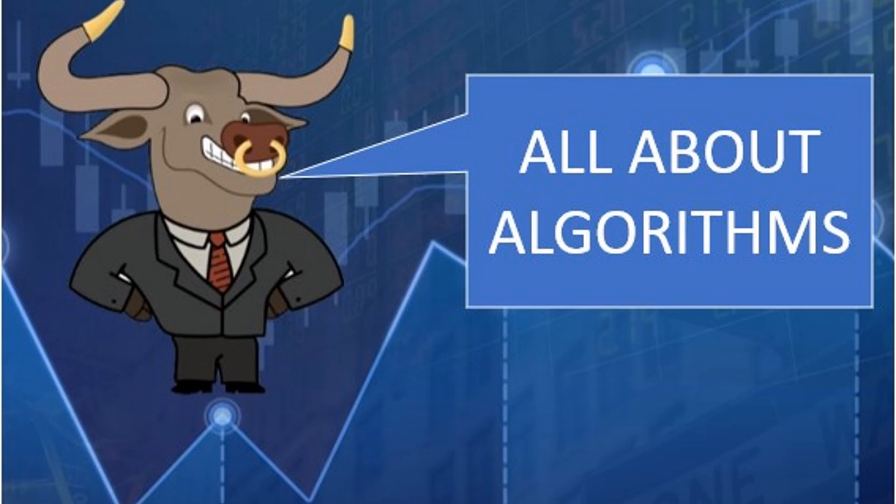What could be the easiest example of an algorithm? I could program my algorithm to buy 10% of the volume of a stock over the course of the day. So if a million shares trades, I'll buy 100,000. If 100,000 shares trades, I'll buy 10,000. So that's really about the simplest.